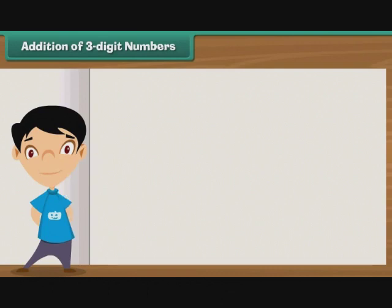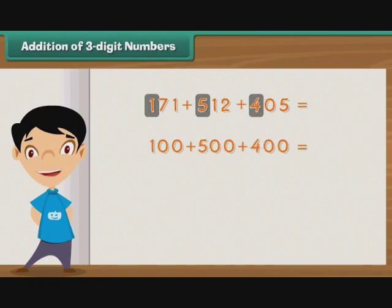Let us now see how we can simplify the addition of numbers with three or more digits. Let us try and add 171, 512 and 405. To simplify the addition, we proceed according to place values. Let us begin with the digits at the hundreds place, that is, 1, 5 and 4. We add 100, 500 and 400. The sum is 1000.